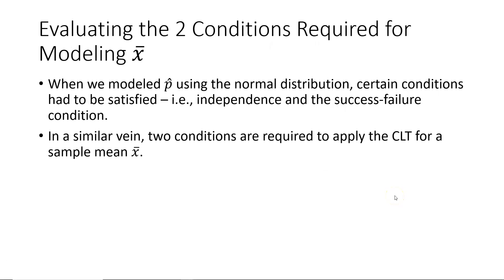Recall that when we modeled the sampling distribution of sample proportions in chapters 5 and 6 using the normal distribution, certain conditions had to be satisfied, namely independence and the success-failure condition. In a similar vein, there are two conditions required to apply the central limit theorem for a sample mean x-bar.